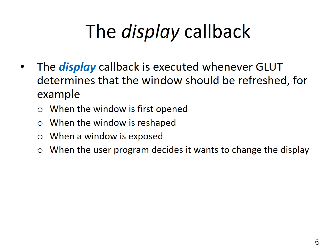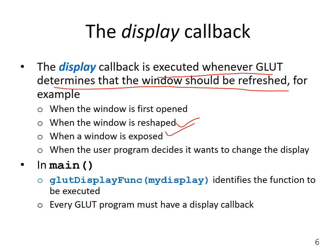The display callback function is executed whenever GLUT determines that the window should be refreshed — for example, when the window is first opened, when it is reshaped, when it is exposed because we closed a window that was in front of it, or when the user program decides it wants to change the graphics inside the display. In main, we define the callback function for display as GlutDisplayFunc with a name like MyDisplay, or any other name we choose. Every GLUT program must have a display callback, since this is about graphics and we must have a window to display them.